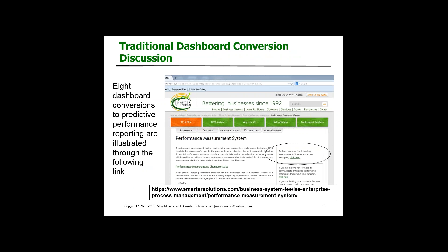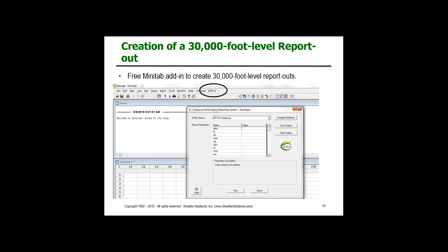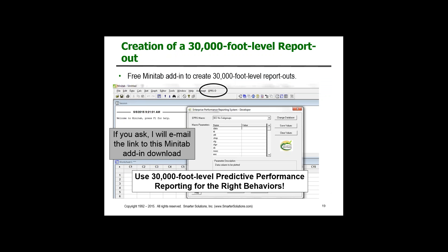I've given an example of one application of 30,000-foot-level reporting. I've got eight more examples on a particular website link, which I can give you if you ask. An add-in to Minitab called EPRS-D can also be sent to you if you'd like to use it to create these charts — there's no charge for this add-in to Minitab. This is a good way of creating 30,000-foot-level report outs.